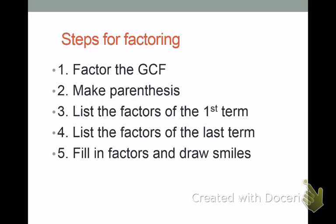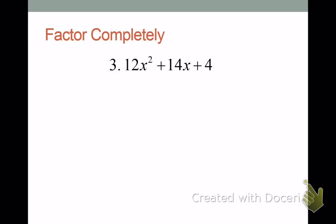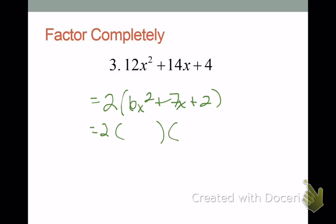We're going to talk about factoring trinomials some more. The same steps apply — I'm even going to use the draw smiles a little more. What do you always look for first? GCF. So we factor out a 2, divide all terms by 2, and end up with 6x² plus 7x plus 2. Now we want to factor this trinomial into two binomials, so we create two sets of parentheses. We need to factor the 6x² first — there's definitely going to be an x and an x.